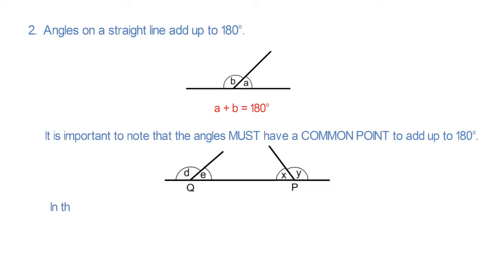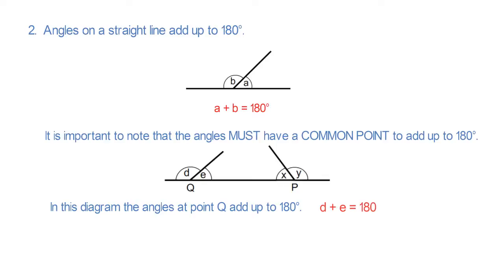In this diagram the angles around point Q add up to 180 degrees, so D add E is 180 degrees. And the angles around point P add up to 180 degrees, so X add Y equals 180 degrees.